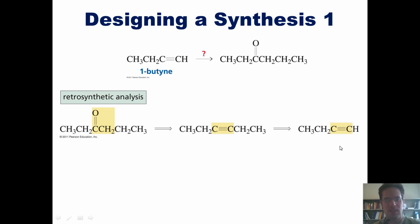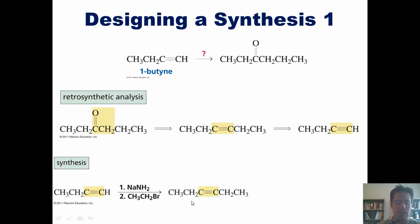Now we will look at this synthetic design in the forward direction by actually placing specific reagents over the arrows. Once again in the forward direction, I begin with my original starting material, 1-butyne, I treat it with NaNH2, and then in step two, ethyl bromide. What would happen is this NaNH2 removes this hydrogen, giving me a negatively charged carbon, and that negatively charged carbon comes in and attacks the CH2 and kicks off the bromide, giving me this product.